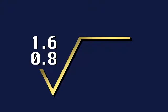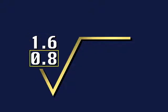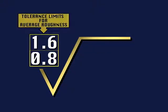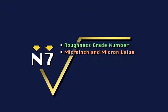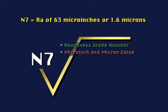In this example, the length from one waviness peak to the next must be less than two inches. In another example, you see two values in the roughness average area of the symbol. The top value is one and six tenths microns and the bottom value is eight tenths of a micron — these are the tolerance limits for average roughness, stating that it must fall between eight tenths and one and six tenths microns. On older prints, you will sometimes find the letter N followed by a number between one and twelve in the RA area — this is a roughness grade number. For example, N7 means this surface must have a roughness average of 63 microinches or one and six tenths microns.